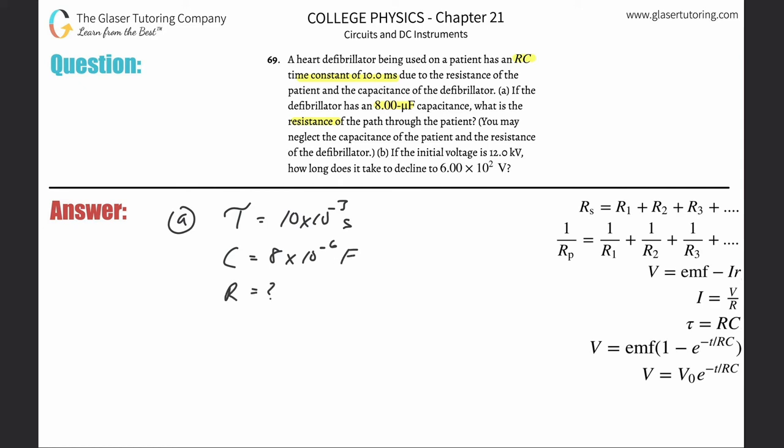Now they ask for resistance. How do we relate them? We relate them via the formula: time constant is equal to the resistance multiplied by the capacitance. To solve this for R, simply cross multiply that C down. So it's going to be 10 times 10 to the minus 3, all divided by 8 times 10 to the minus 6. So resistance here is about 1.25 times 10 to the 3 ohms, 1,250 or so ohms. That's the resistance.